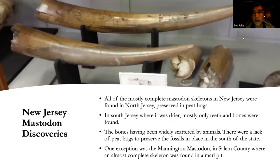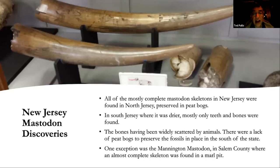Mostly complete mastodon skeletons in New Jersey were found in North Jersey, preserved in peat bogs. In South Jersey, where it was drier, mostly only teeth and bones were found — widely scattered by animals after death, due to the lack of peat bogs to preserve the fossils in place. One exception was the Mannington Mastodon, found in Salem County, where an almost complete skeleton was discovered in a marl pit.